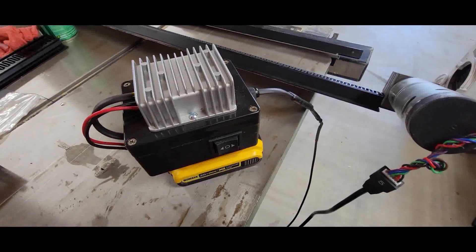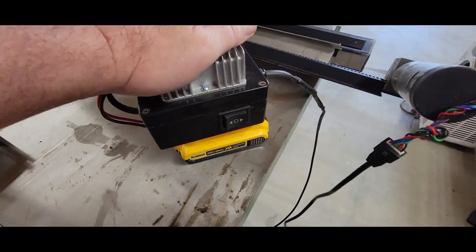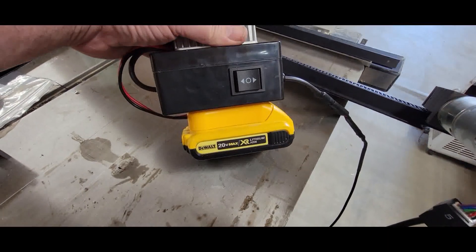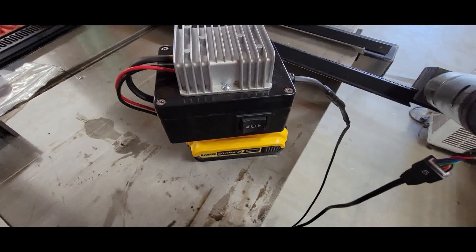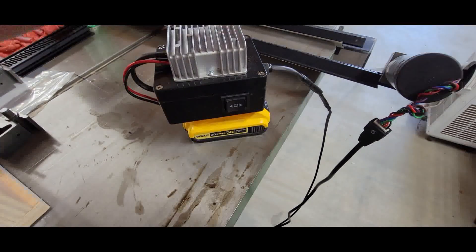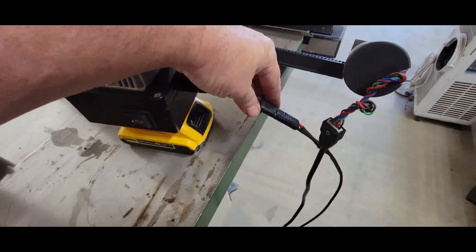This is my new and improved version of my power pack for the DeWalt 20 volt lithium battery. What it does is it converts the 20 volts down to 12 volts and I have a universal connector here for positive and negative.